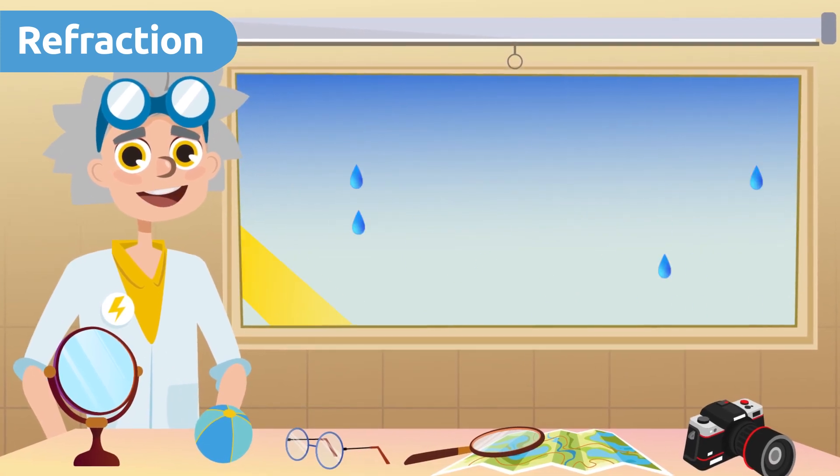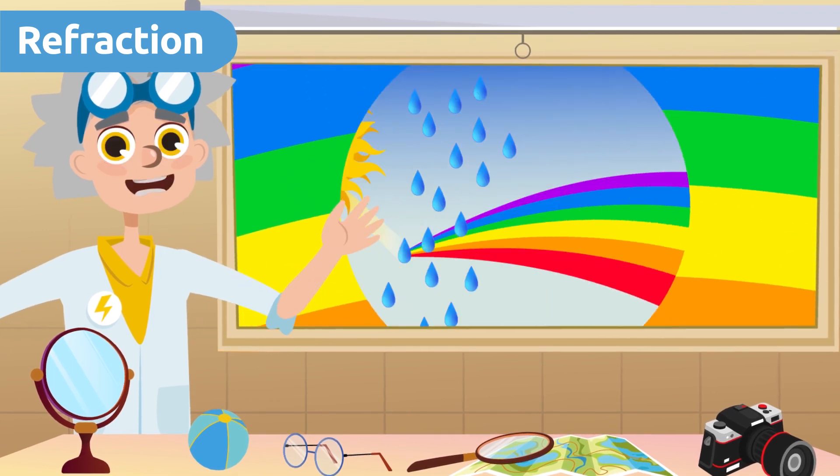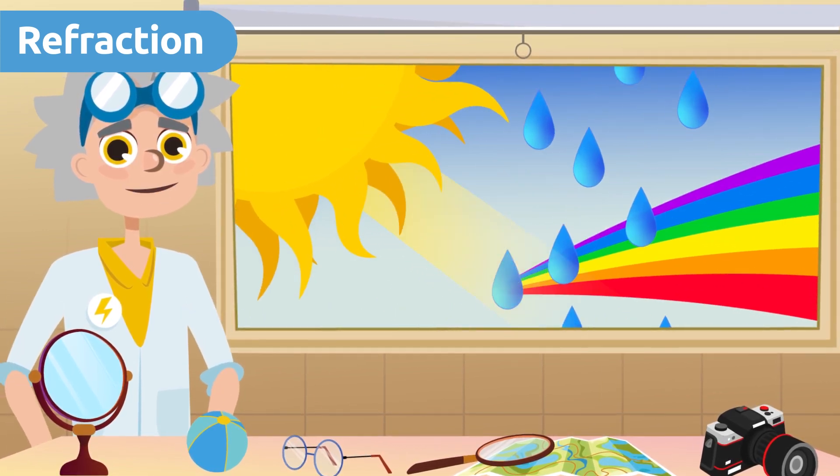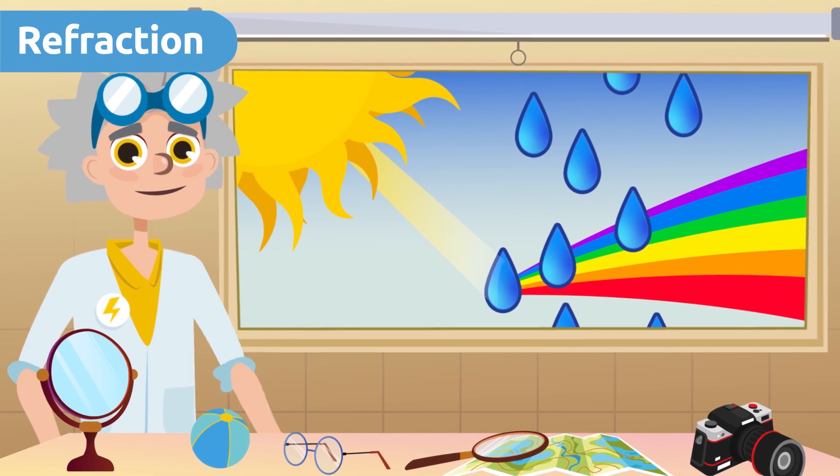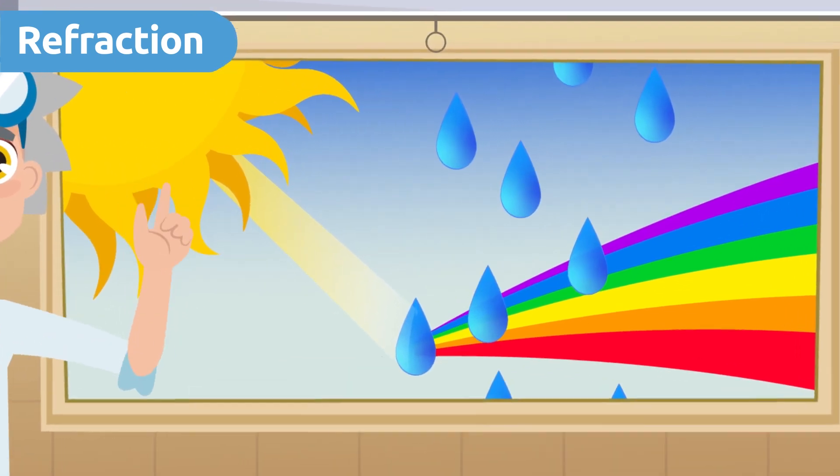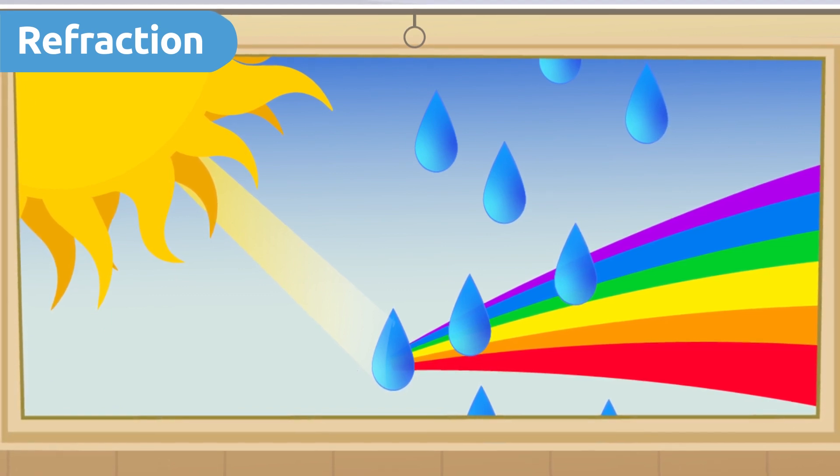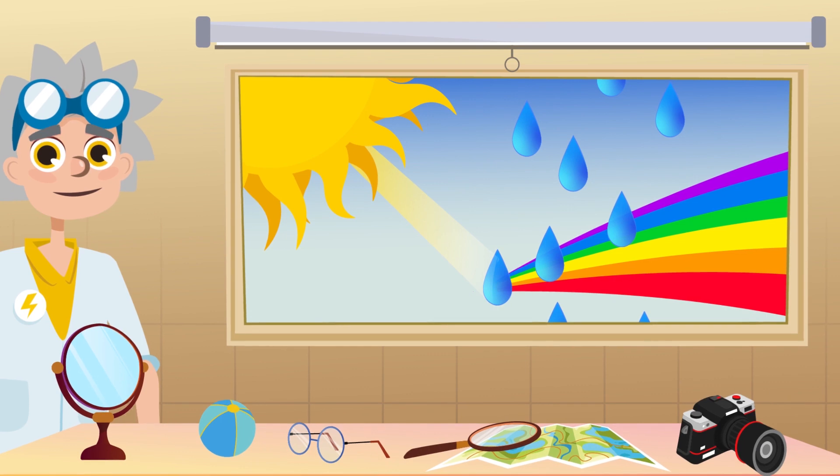Can you think of any natural event where this phenomenon occurs? Rainbows are formed when sunlight passes through raindrops. Thanks to refraction, white light is converted into a colored beam containing red, orange, yellow, green, blue, and violet. Wow!